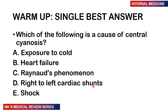Here's a warm-up question — single best answer. Which of the following is a cause of central cyanosis? A. Exposure to cold. B. Heart failure. C. Reynolds phenomenon. D. Right to left cardiac shunts. E. Shock. You may pause the video at this moment, write down your answer, and I will give you the answer at the end of the lecture.